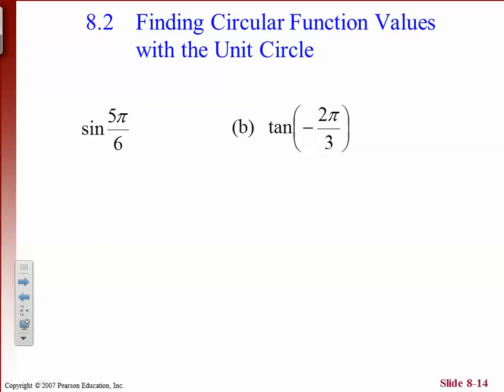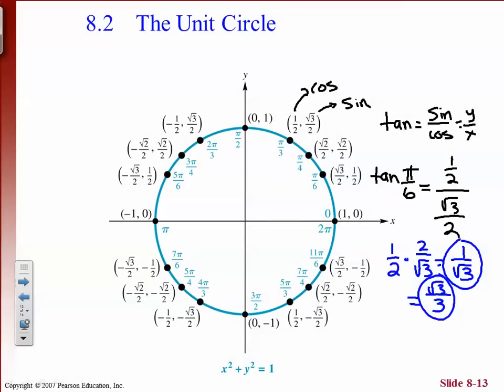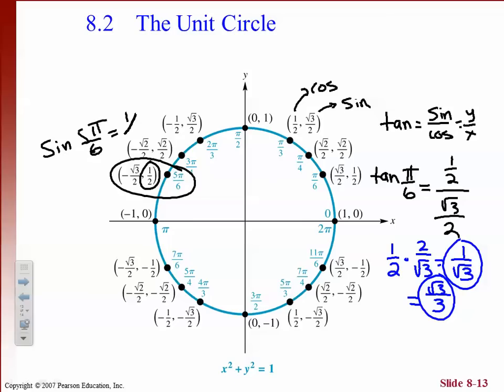Using circular function values with the unit circle: find the exact value of sine of 5 pi over 6 and the tangent of negative 2 pi over 3. For sine of 5 pi over 6 — we find that point on the circle, and the sine is just the y value, which is 1/2. So sine of 5 pi over 6 equals 1/2.